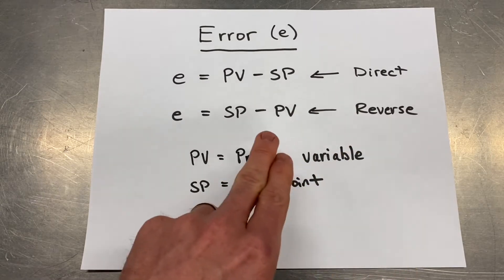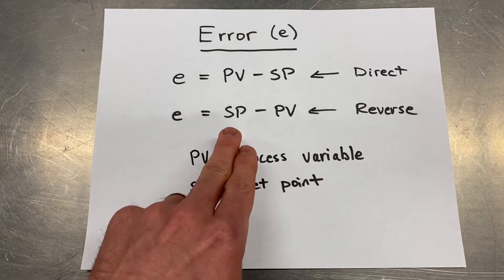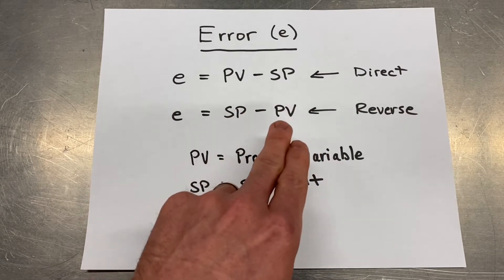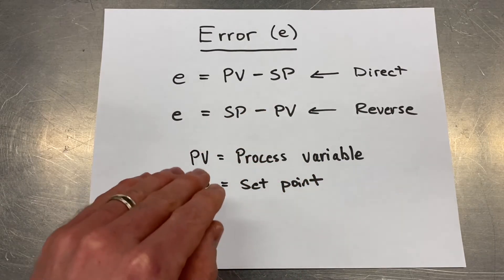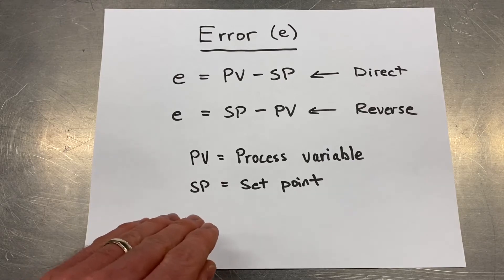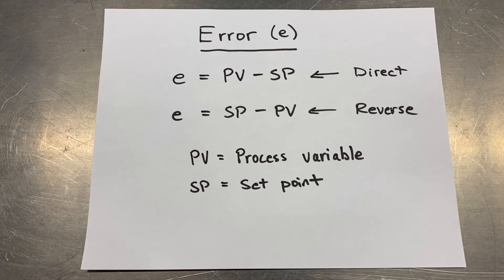In our case, we're using a reverse acting controller, because when the level or the process variable goes above the set point, or where we want the level to be, we create this negative error. The negative error causes our valve to close. So when the level gets too high, we want the valve to close. When the level drops below the set point, we want the valve to open. So we're using a reverse acting controller for this process.